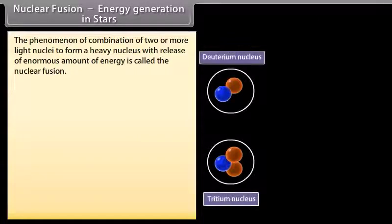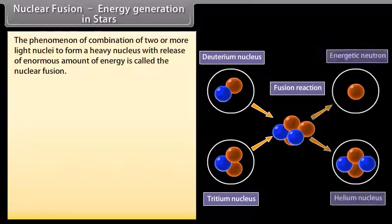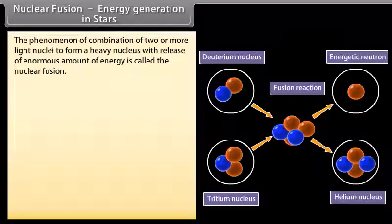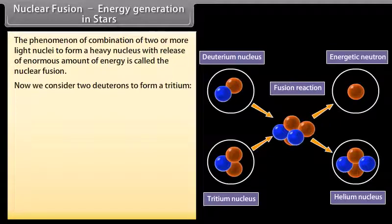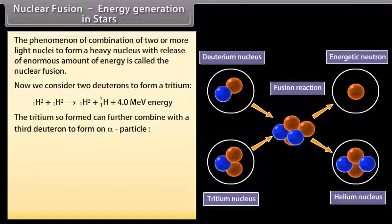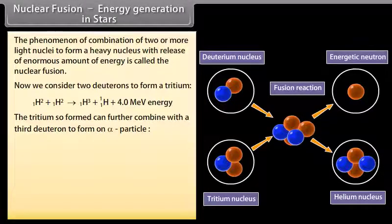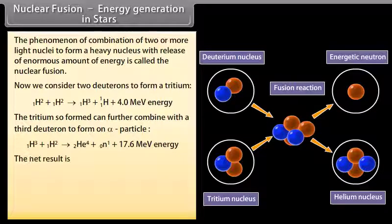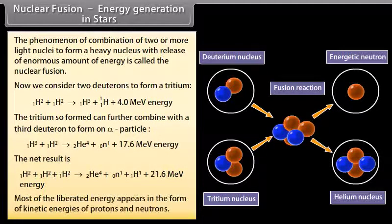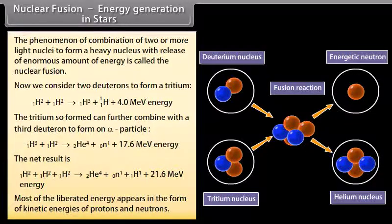Nuclear fusion. Energy generation in stars. The phenomenon of combination of two or more light nuclei to form a heavy nucleus with release of enormous amount of energy is called the nuclear fusion. Now we consider two deutrons to form a tritium. The tritium so formed can further combine with the third deutron to form an alpha particle. The net result is. Most of the liberated energy appears in the form of kinetic energies of protons and neutrons.